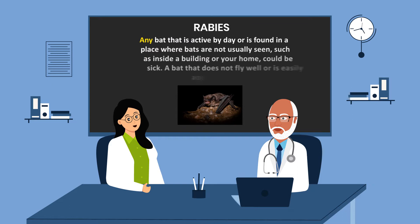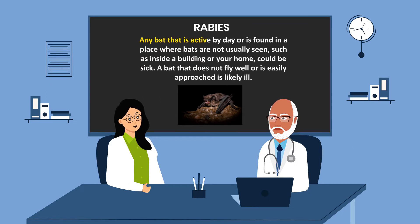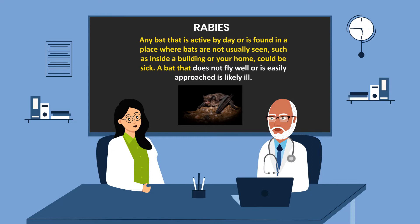Any bat that is active by day or is found in a place where bats are not usually seen, such as inside a building or your home, should be considered to be sick. A bat that does not fly well or is easily approached is likely ill.